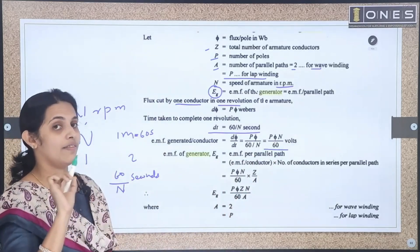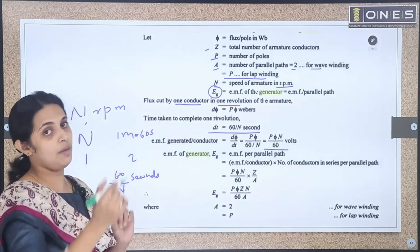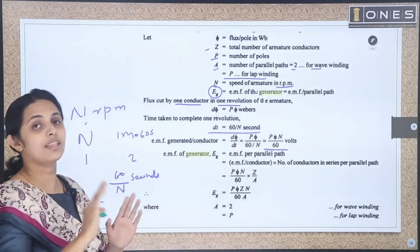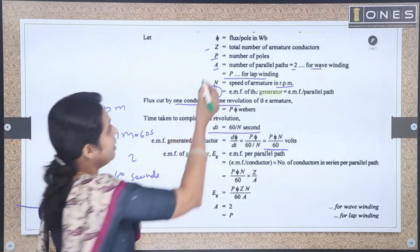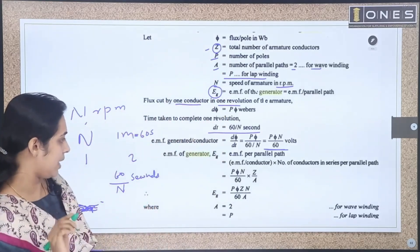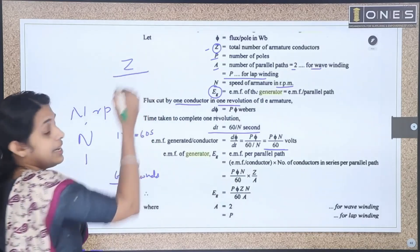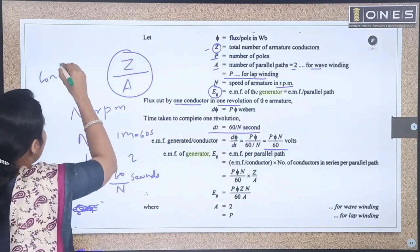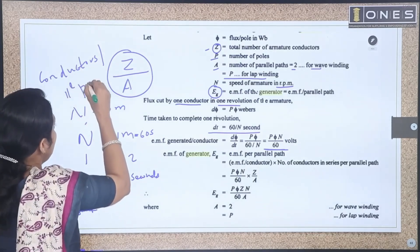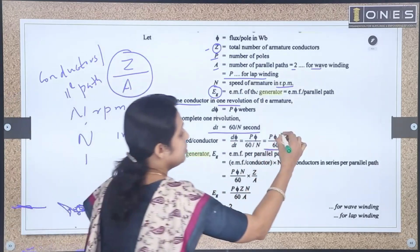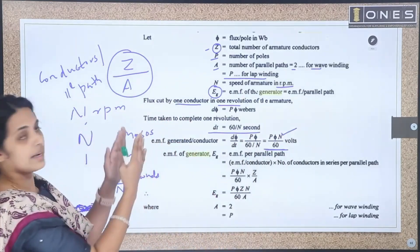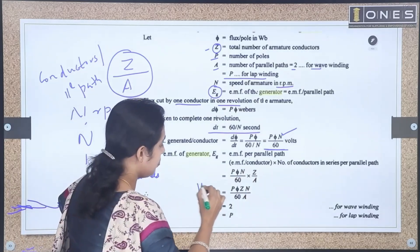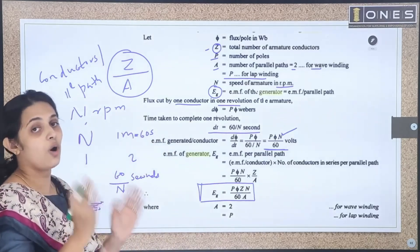The EMF per conductor is PφN/60 volts. Now, conductors per parallel path equals Z divided by A. The total generated EMF in one parallel path is the EMF per conductor multiplied by conductors per path. So EG equals PφZN divided by 60A. This is the overall EMF equation of a DC machine.